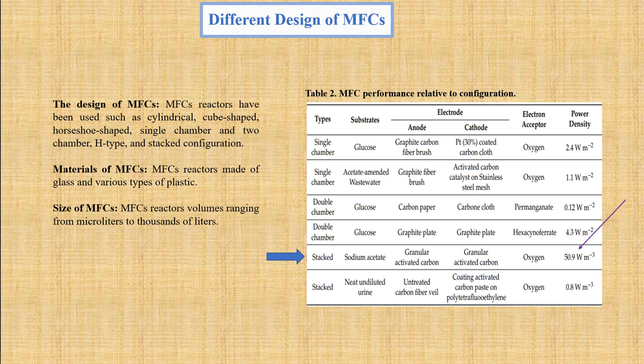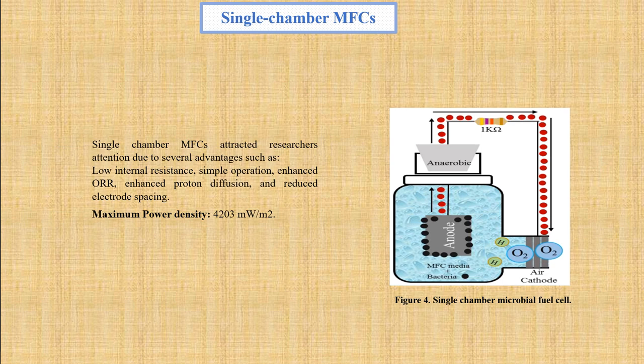Microbial fuel cell reactor volumes range from microliters to thousands of liters. The single-chamber microbial fuel cell configuration has attracted researchers' attention due to several advantages: lower internal resistance, simple operation, enhanced oxygen reduction rate on the cathode, enhanced proton diffusion, and reduced electrode spacing. It also requires less frequent changing of oxidative media, making this configuration more adaptable. A metal-organic framework with an activated carbon cathode in a single-chamber microbial fuel cell produces two-fold greater maximum power density compared to an activated carbon or platinum cathode.